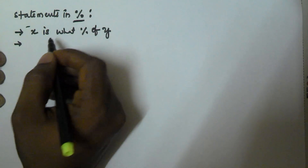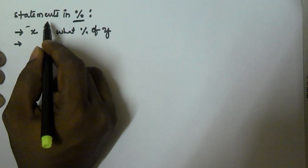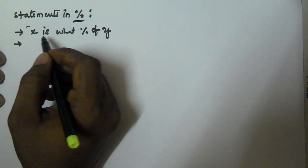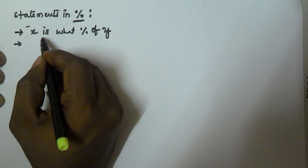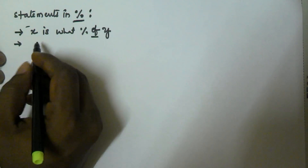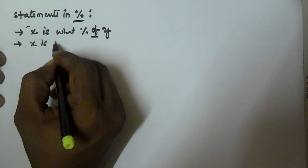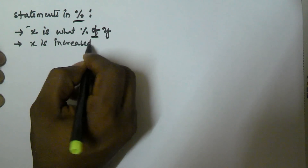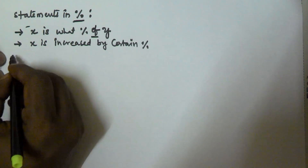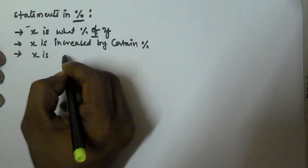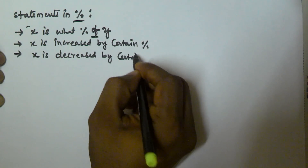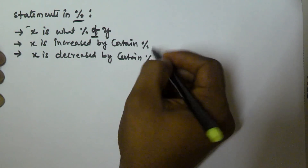Hello friends, in this video I will show you what are the general statements we see in percentage related problems. The first statement is: x is what percentage of y. The second kind of statement is: x is increased by a certain percentage. And another one is: x is decreased by a certain percentage. Generally we see these three kinds of statements in percentage problems.